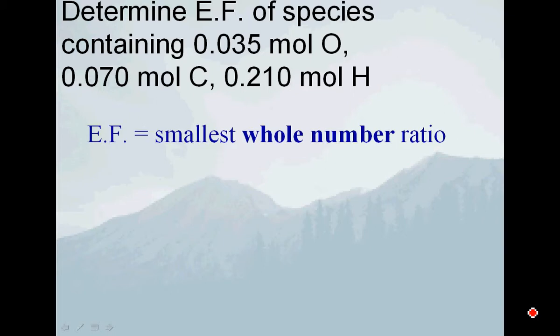We know that the empirical formula is simply the smallest whole number ratio of the elements, and we need the whole number mole ratio. To figure this out, we know the moles of each component: 0.035 moles of oxygen, 0.07 moles of carbon, and 0.210 moles of hydrogen. Those aren't small whole number ratios, so we're going to divide by the smallest number, which is 0.035.